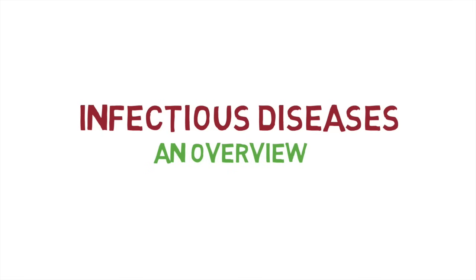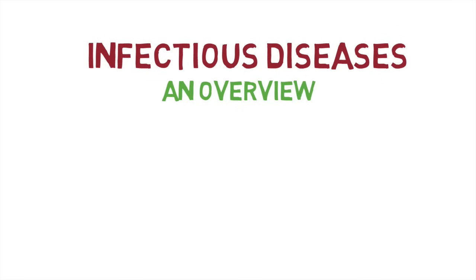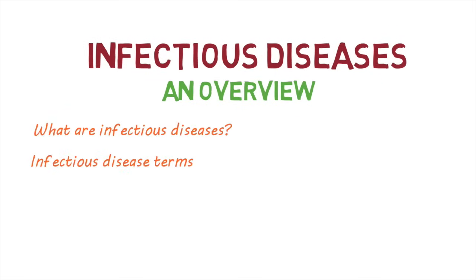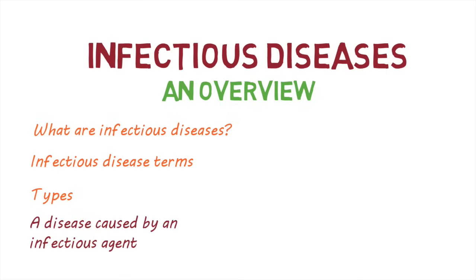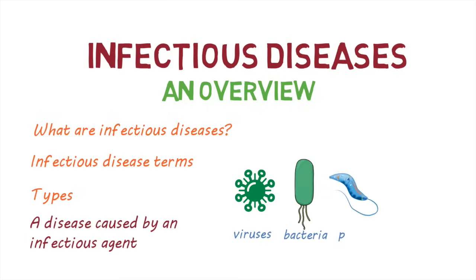We're going to take a look at infectious diseases — what they are, some terms used to describe them, and a few different types. First of all, what is an infectious disease? An infectious disease is a disease caused by an infectious agent, like viruses, bacteria, parasites, or fungi.